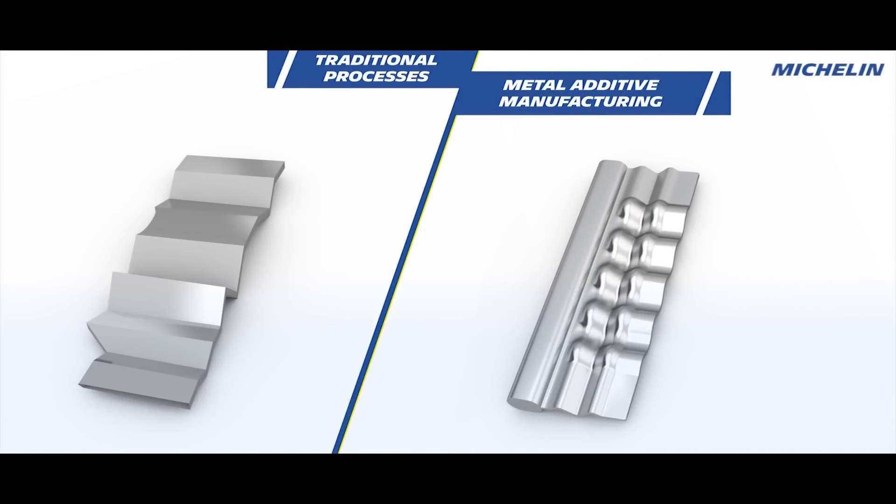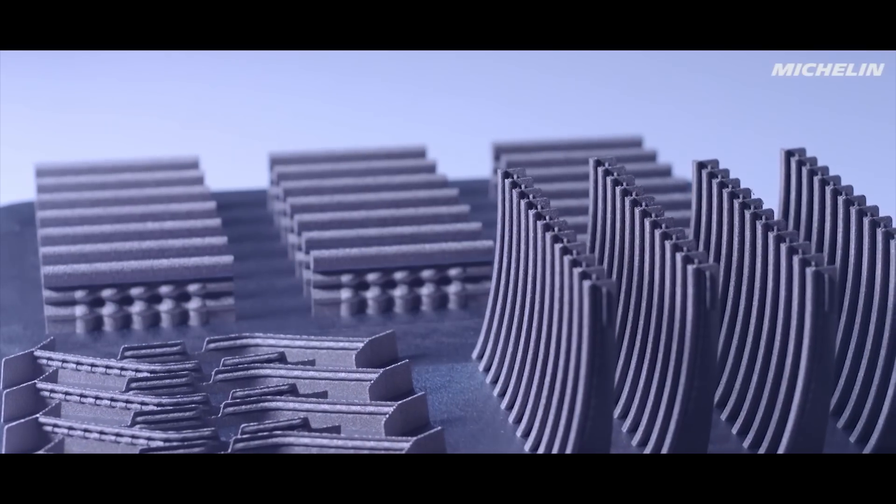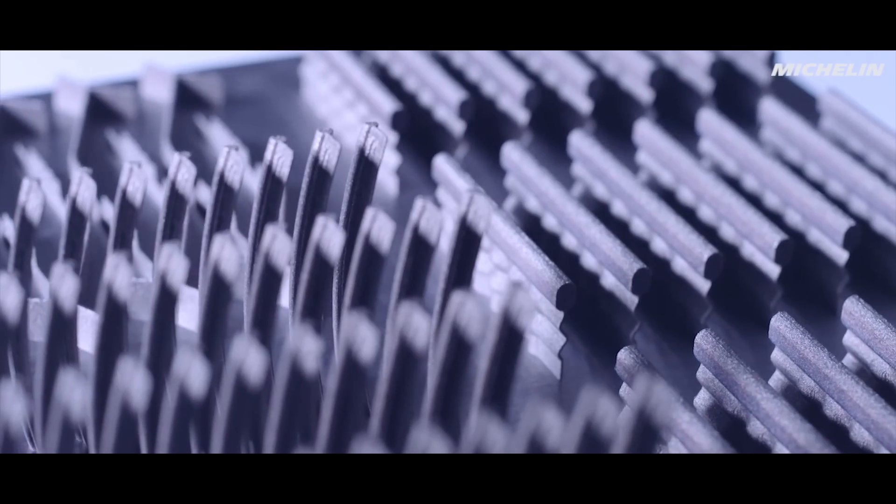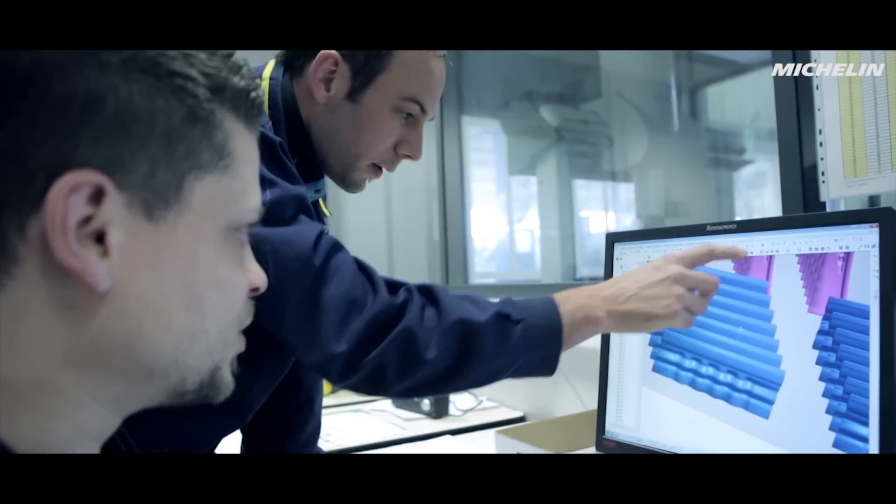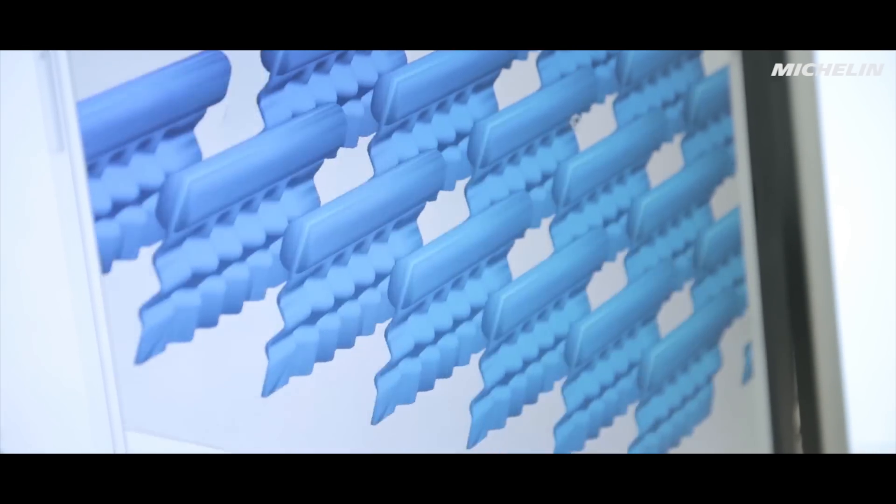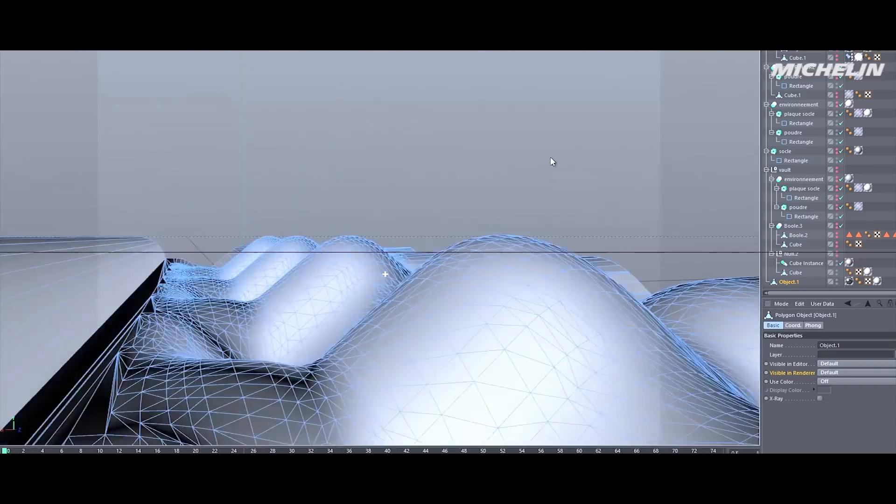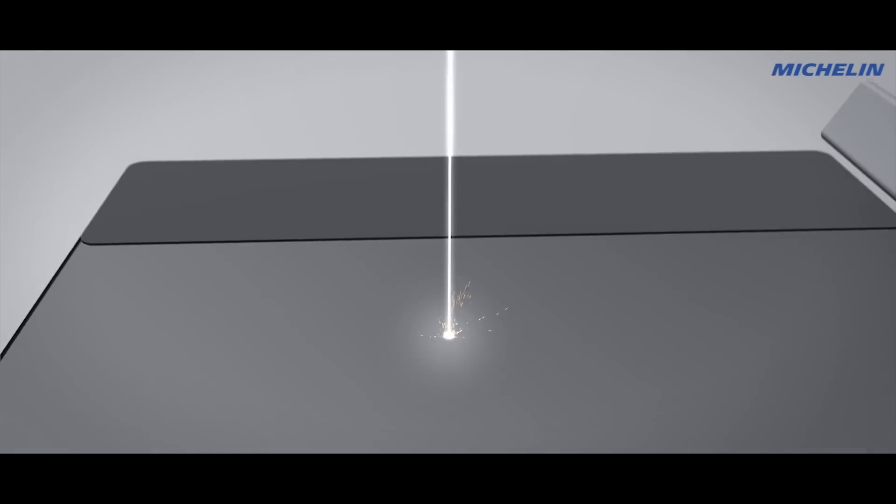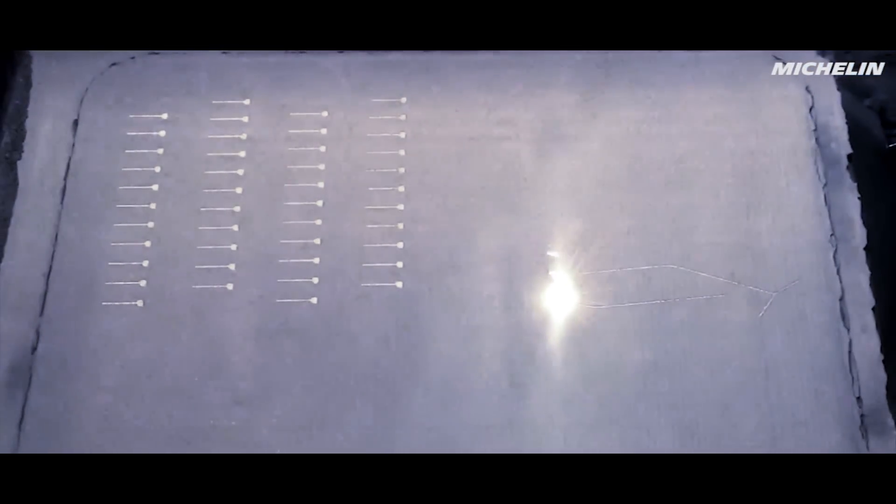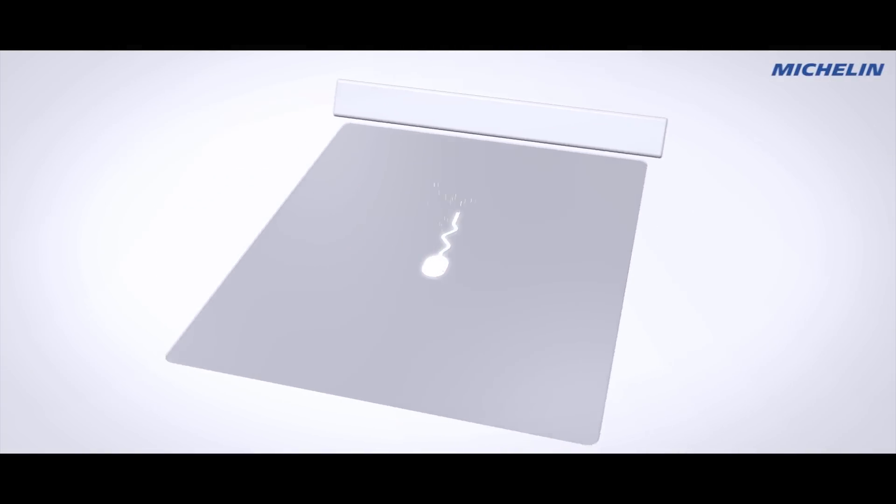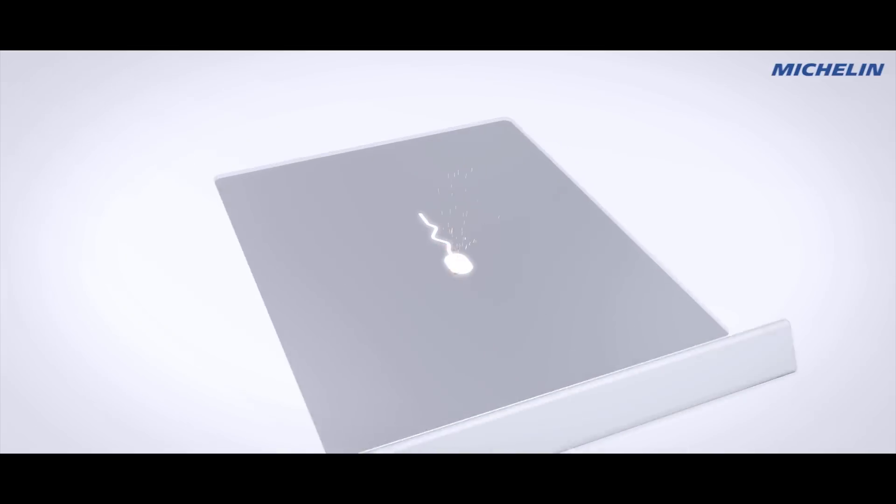Metal additive manufacturing, more commonly known as metal 3D printing, can produce these very complex sipes. In additive manufacturing, we start by modeling the part design. A 3D digital data file controls the operation. A beam of concentrated energy, such as a laser or electron beam, is used to melt a metal powder and generate the object. The material is laid down layer by layer to create the part in just a few hours.